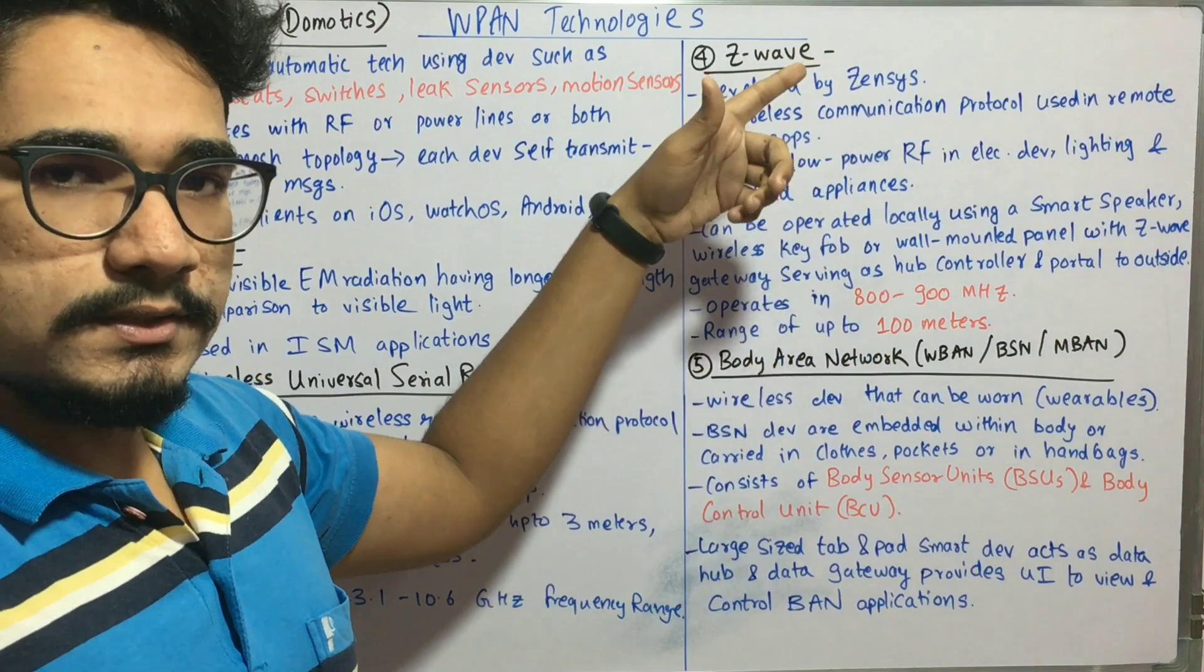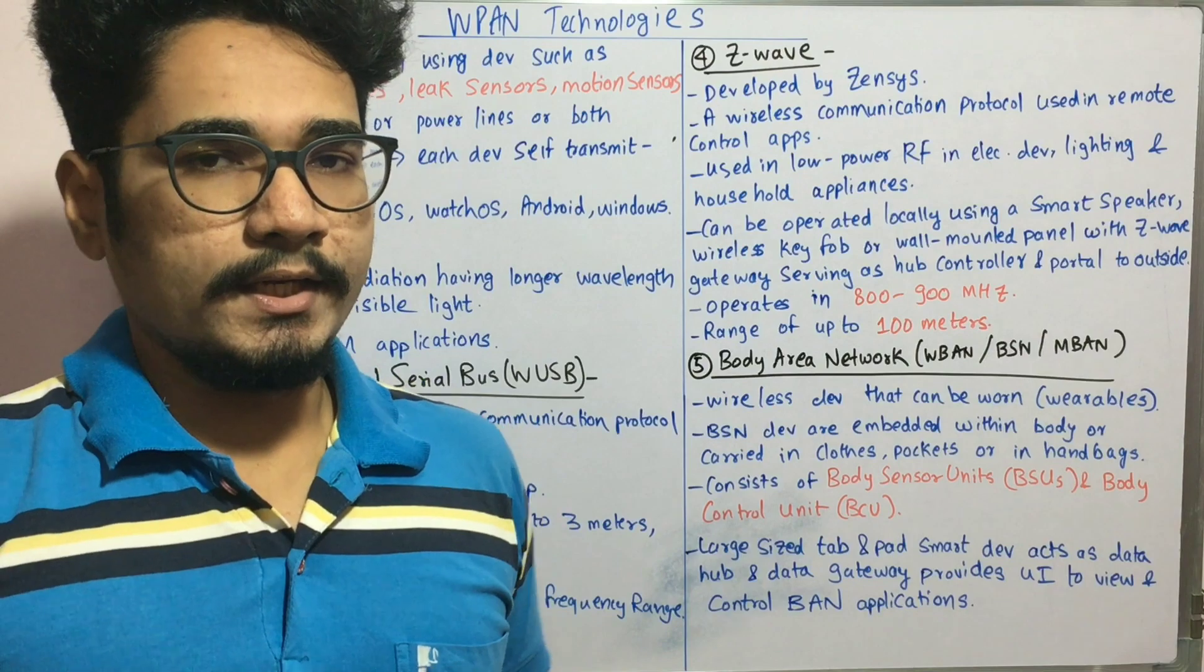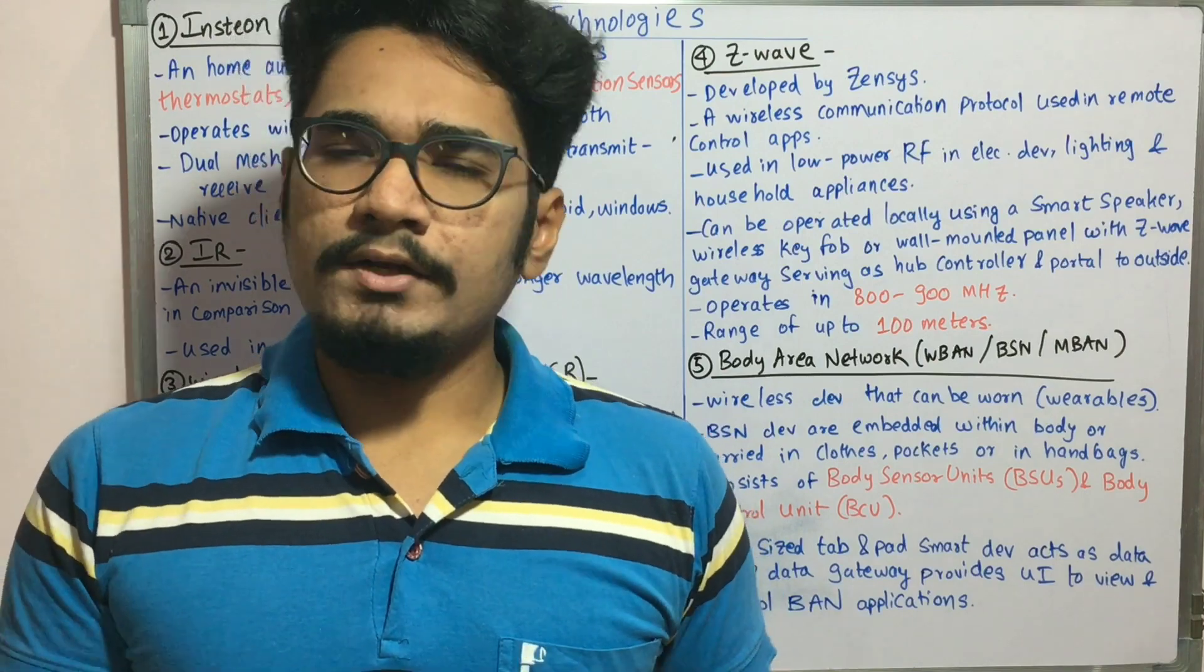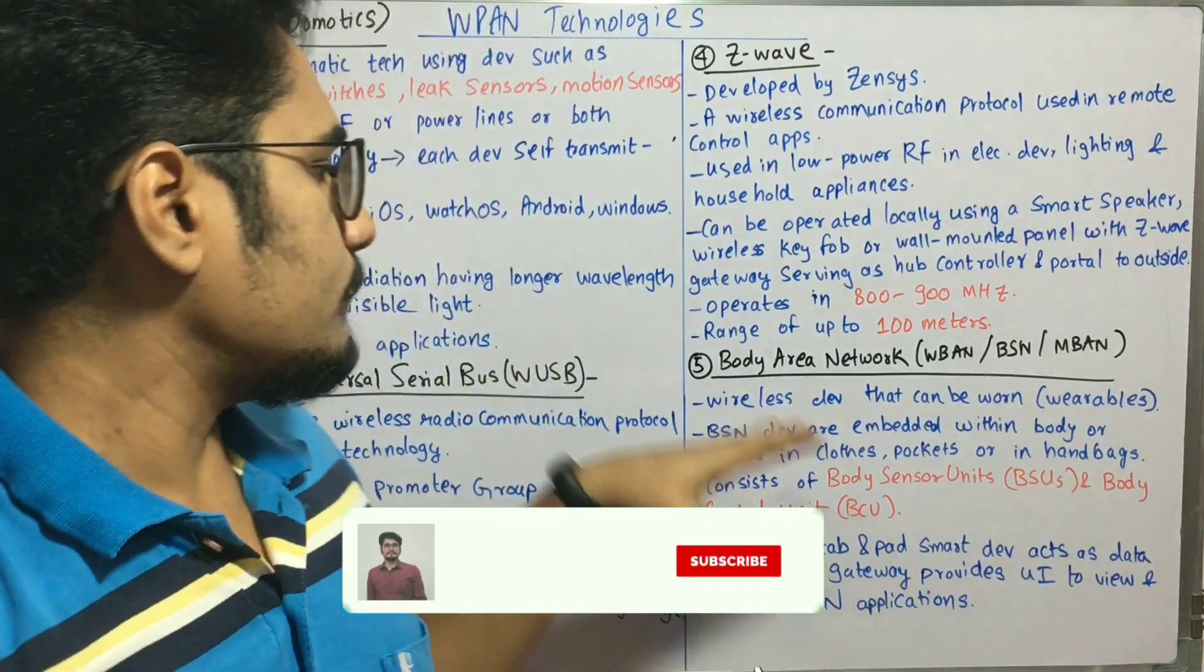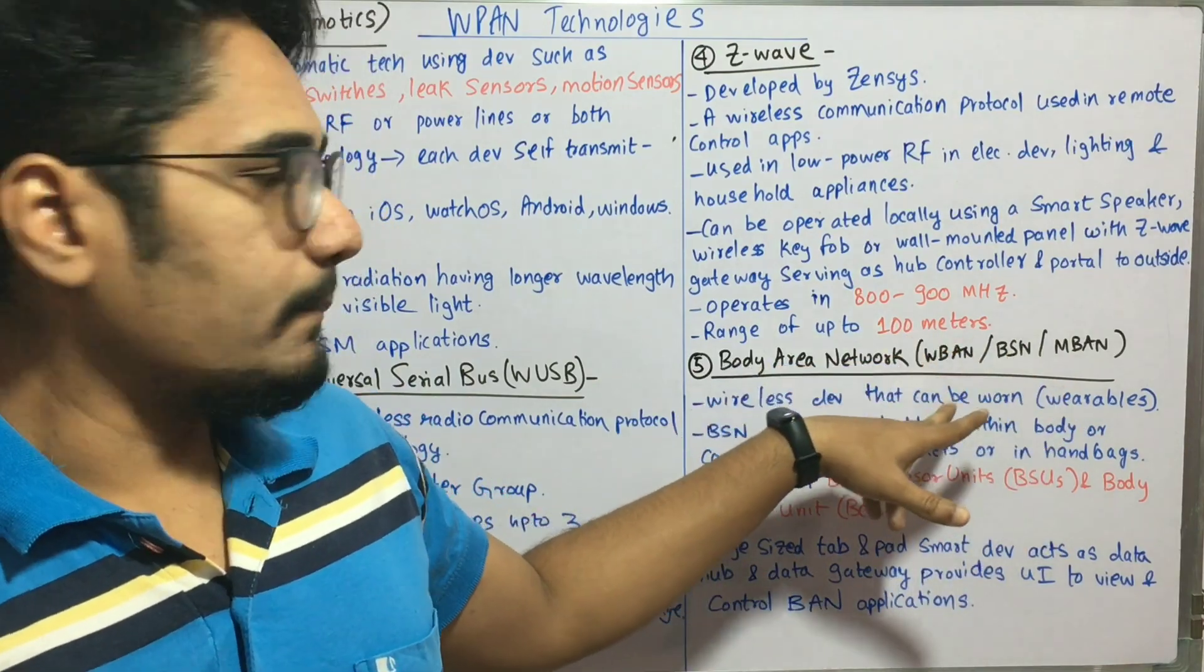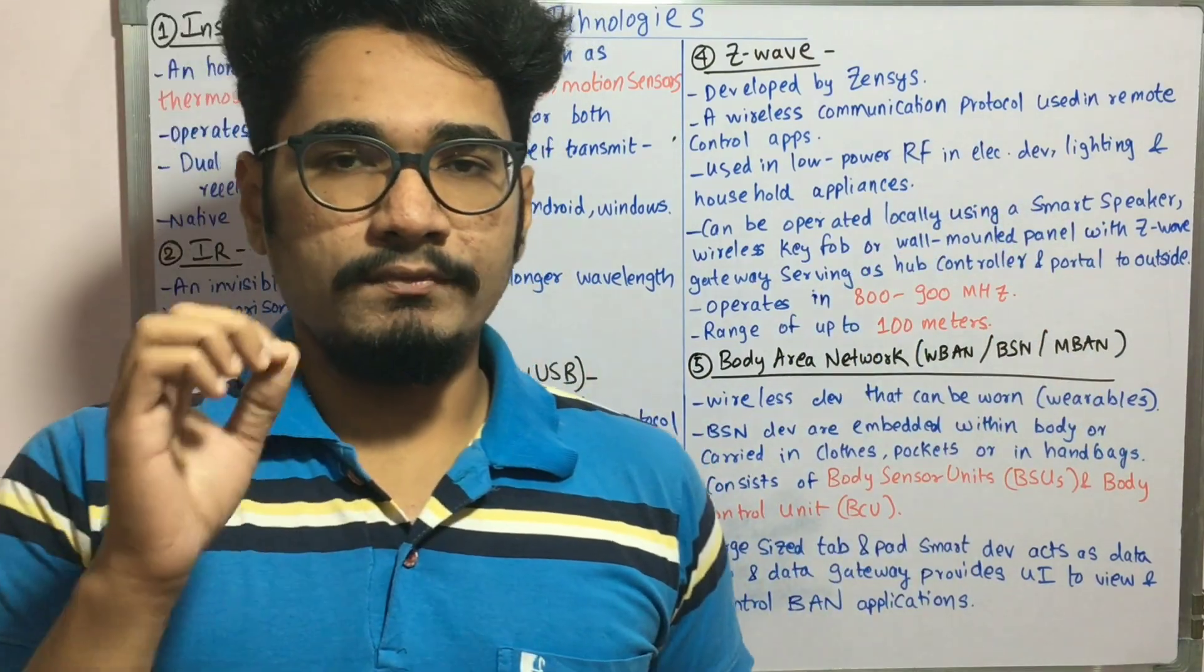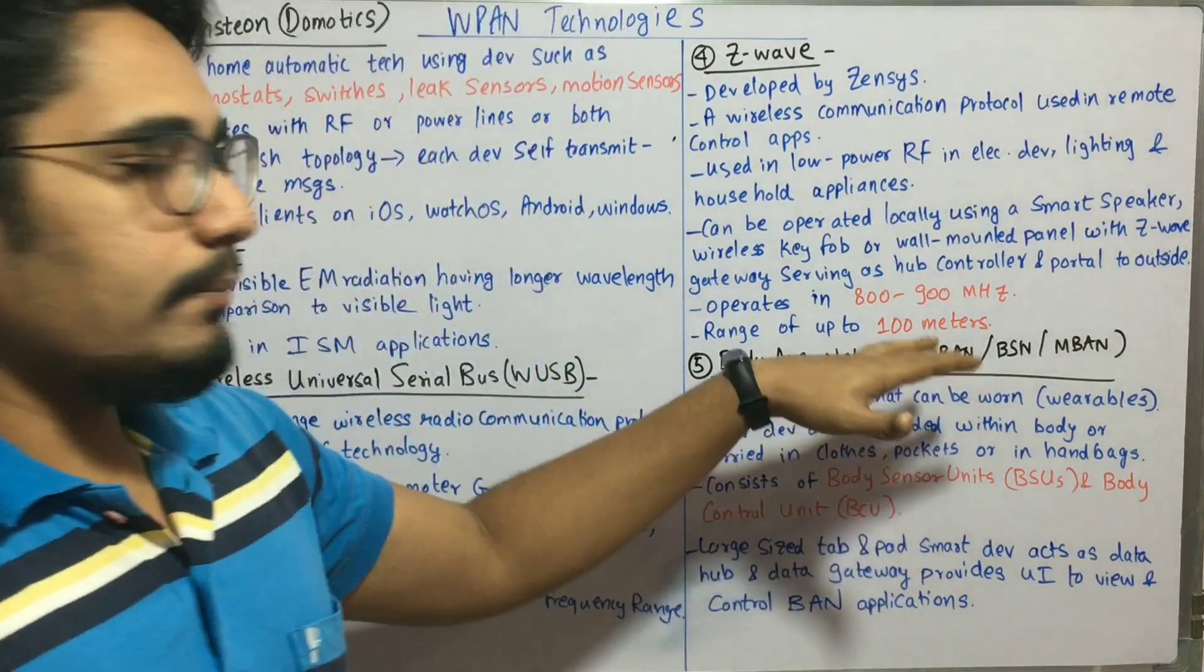Next you have something called the body area network. You have WAN, MAN, LAN, and PAN. Now there is something called body area network, also called body sensor network, wireless BAN, or MBAN, that is medical body area network. It's mainly used in medical applications where you require major monitoring of heart sensors.